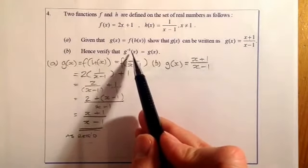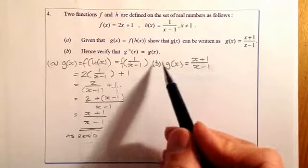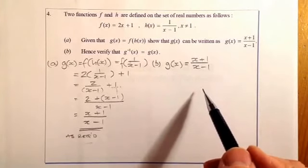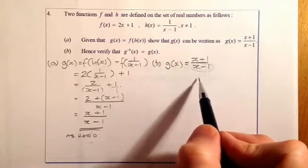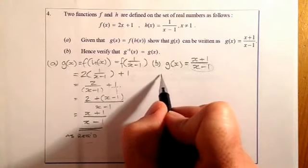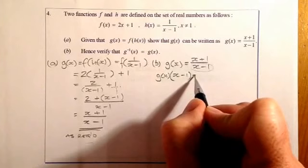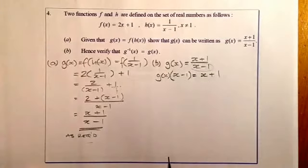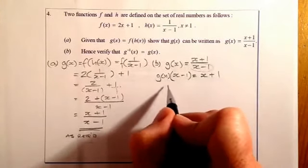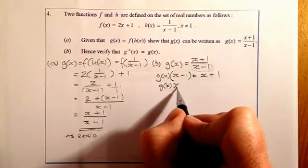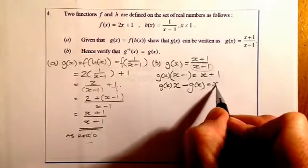To find the inverse function, I'm going to have a formula that starts with x is equal to — I'm going to change the subject of this formula. First step: I'm going to get the denominator away by multiplying. So I've got g of x multiplied by x minus 1, and that's going to equal x plus 1. Multiplying that bracket out gives g of x times x, then g of x times minus 1, which is minus g of x, equals x plus 1.